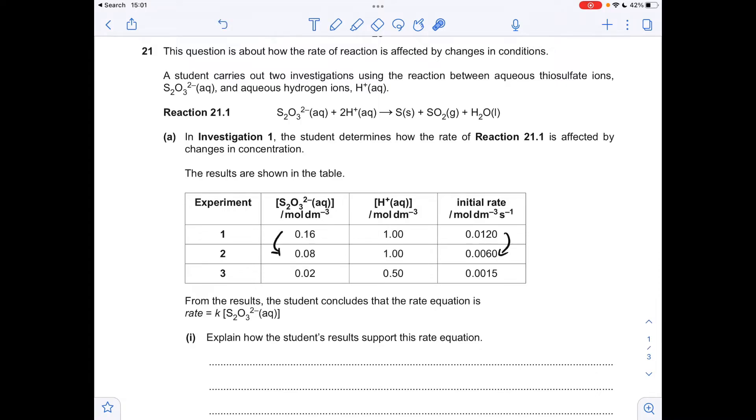So if we look at experiments one and two, you can see the H-plus concentration hasn't changed. The thiosulfate concentration is halved, and the rate's halved. So that's a first-order relationship for the thiosulfate.